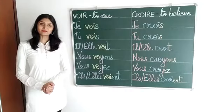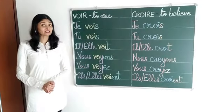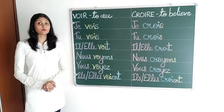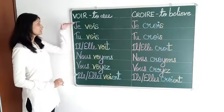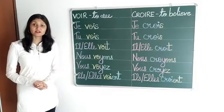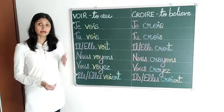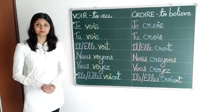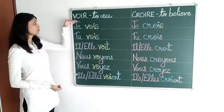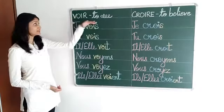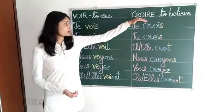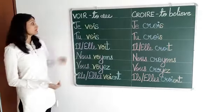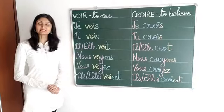Hello, I am Garma and today I am here to explain the conjugation of two new verbs. One is ending with O-I-R and the other one is ending with R-E, but the pattern of conjugation in both verbs will remain the same. Verb VOIR means 'to see' and verb CROIRE means 'to believe.' Let's have a look at how to conjugate these two verbs.